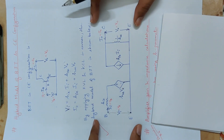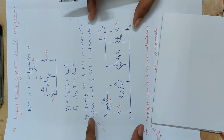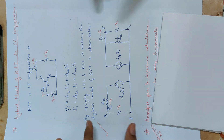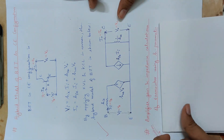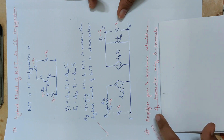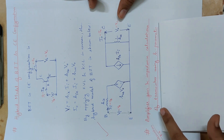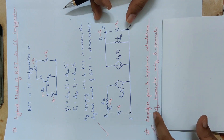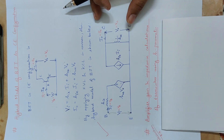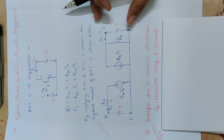Now we have the hybrid model of BJT. We will derive the amplifier gain and impedance of the transistor using h-parameters. When the transistor is acting as an amplifier, we derive current gain, voltage gain, input impedance, and output impedance.